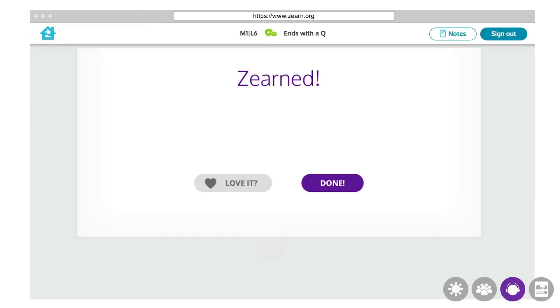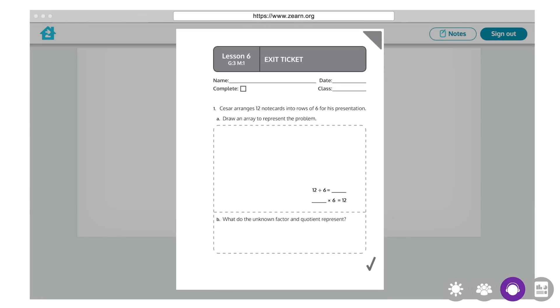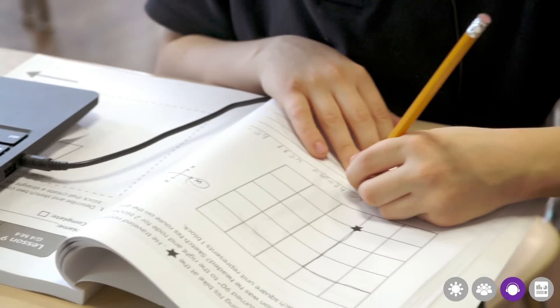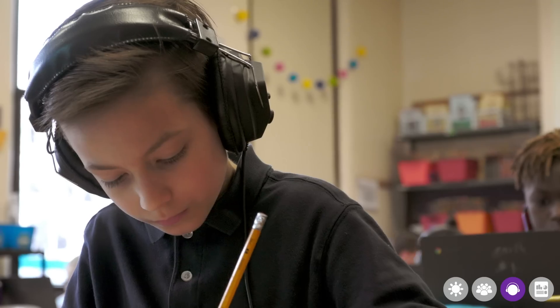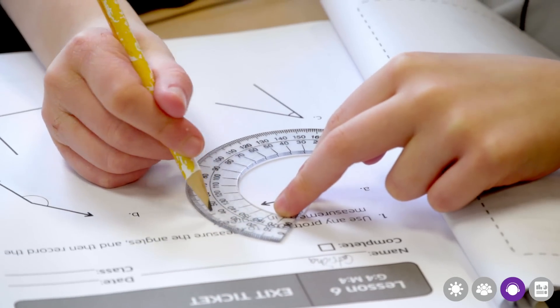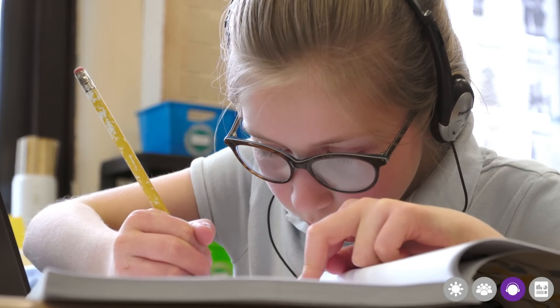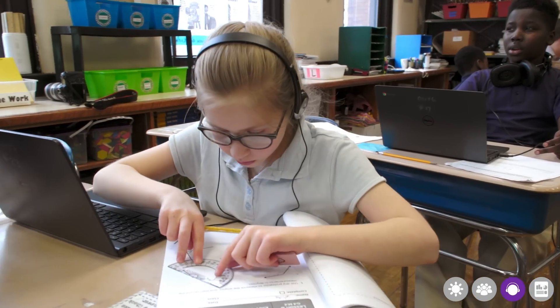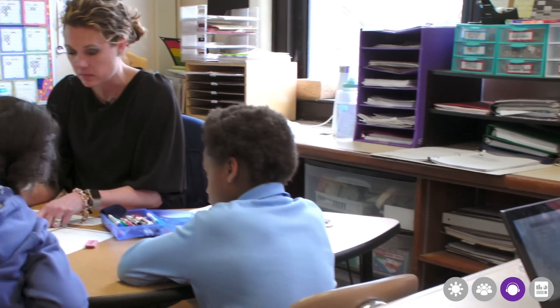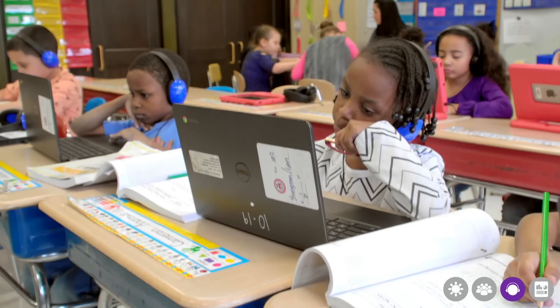Once a student answers all questions correctly in the Tower of Power, students complete a paper and pencil exit ticket as the last step of an independent digital lesson. You can find these in Zearn Math student workbooks or in the printable student notes on each mission page. Exit tickets are unscaffolded practice so teachers can see how well students understand the content of the lesson and can use exit tickets to inform instruction and identify students who may need extra support.